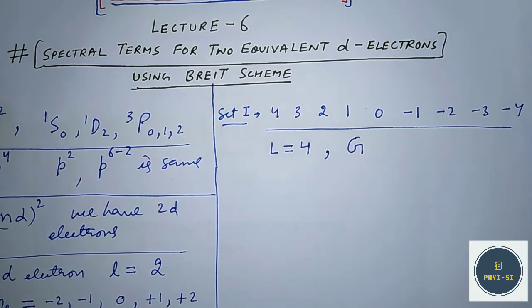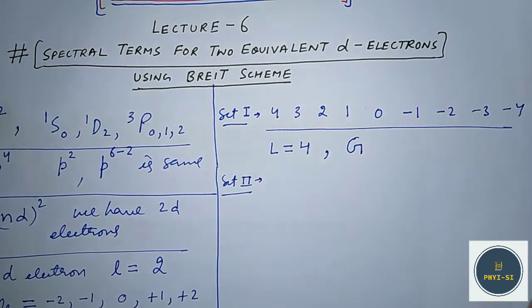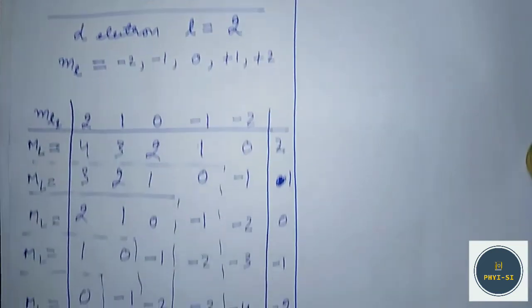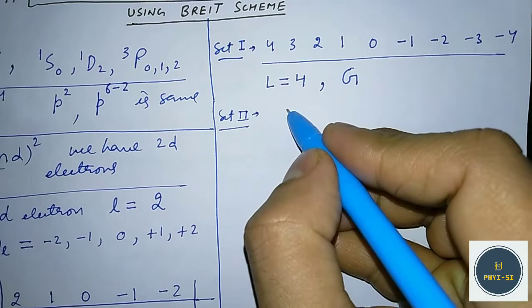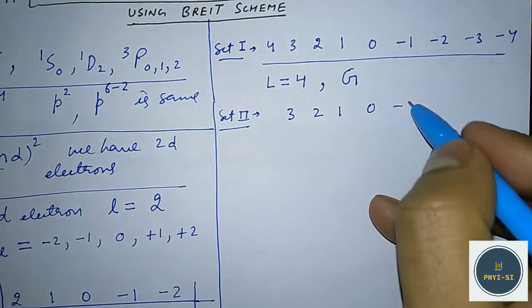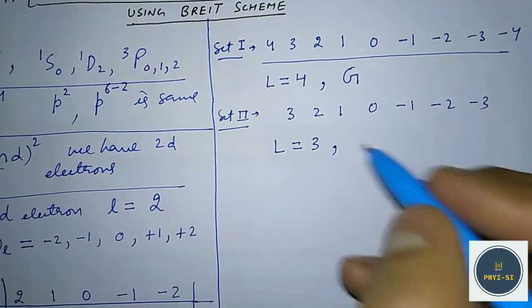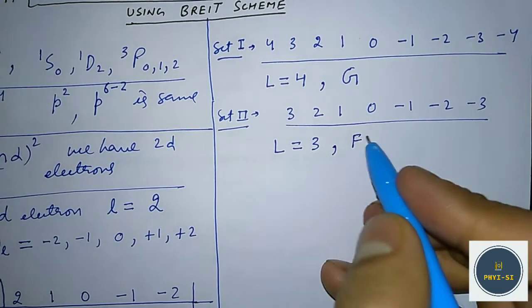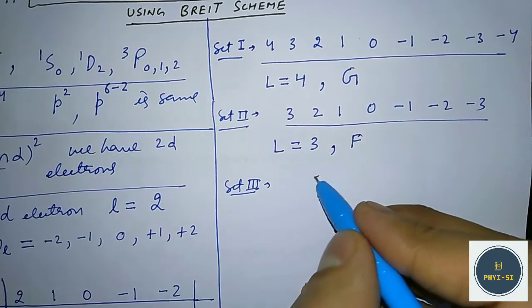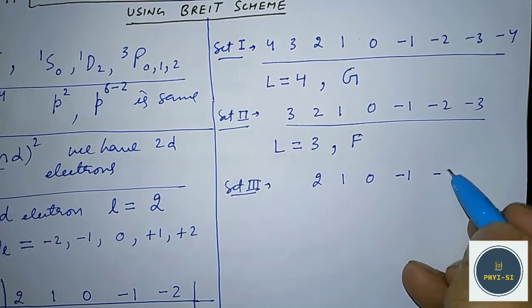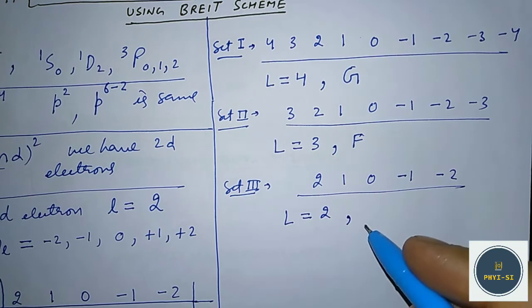Set three will be: 2, 1, 0, −1, −2. For this we have L equal to 2, and we will get the D state from it. Then we will have set four, and for set four the L value is equal to 1, and this will be a P state. Then set five has a single value, for which L is equal to 0, so it will give us an S state.